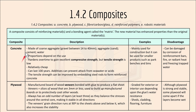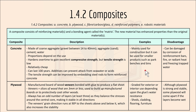Concrete is made with different compositions and proportions depending on the use, and hardens over time to gain excellent compressive strength. Tensile strength is low, which is why reinforced concrete uses steel rods. It is relatively cheap and can last 100 years. It is mainly used in construction but can also be used for smaller products such as pots, benches and bins. A disadvantage is that it can be damaged by corrosion of reinforcement bars, fire, radiant heat and freezing trapped water.